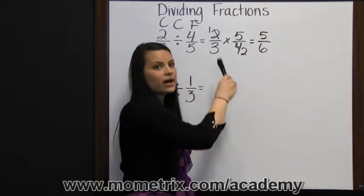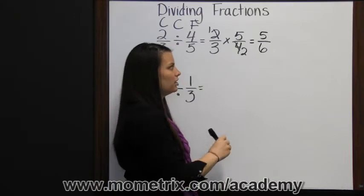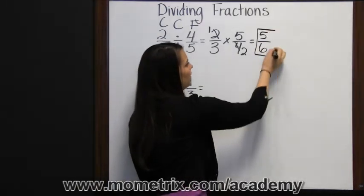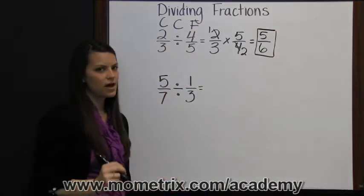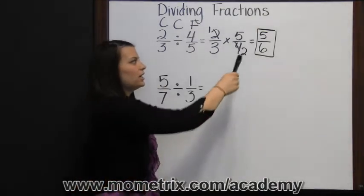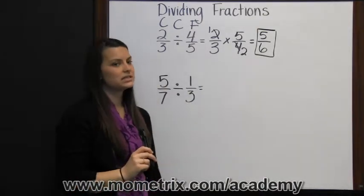Since we simplified before we multiplied, our fraction is already in simplest form, five-sixths. However, if it weren't, then you would need to simplify it.